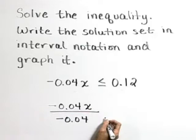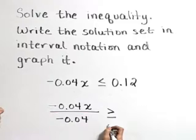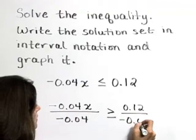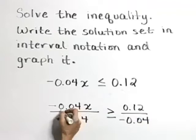Now, when we divide both sides by a negative number, we've got to remember to change the direction of that inequality symbol. The right-hand side, as well, will be divided by negative 0.04.